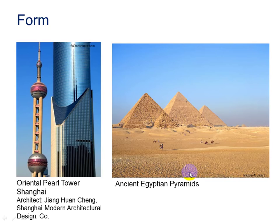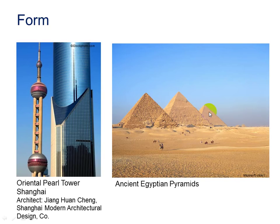The pyramids have a distinctive pyramid form — 3D, geometric. Note that this 2D image gives the impression of 3D objects due to the different values on adjacent surfaces of the pyramids. This surface is lighter and this one is darker — lighter value here, darker value there.